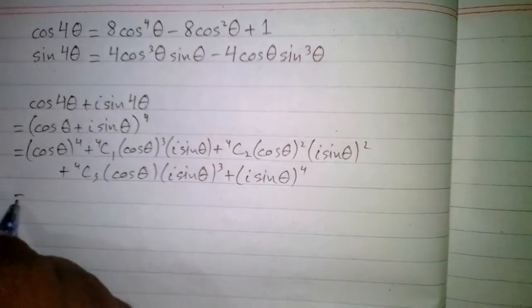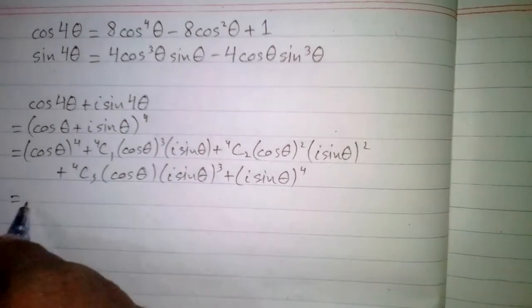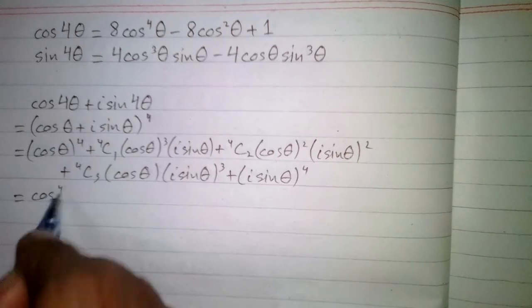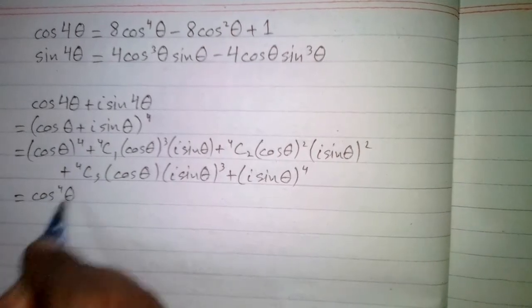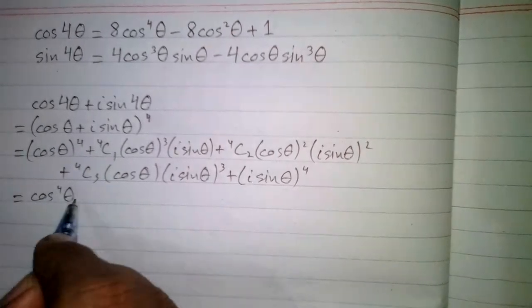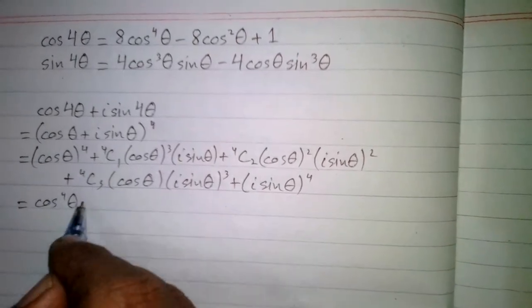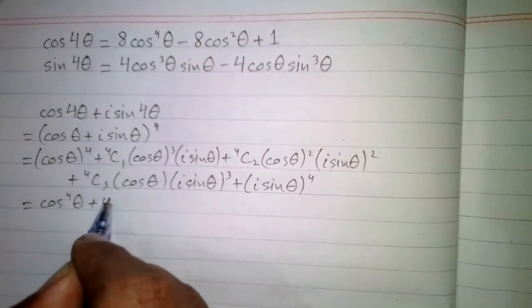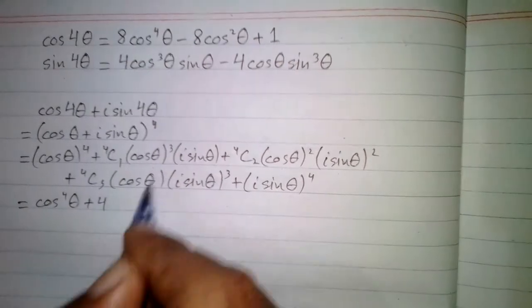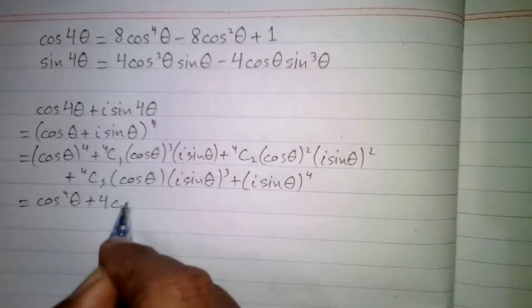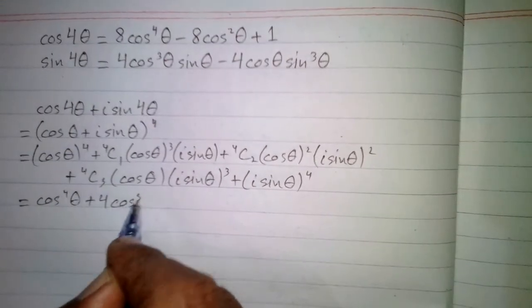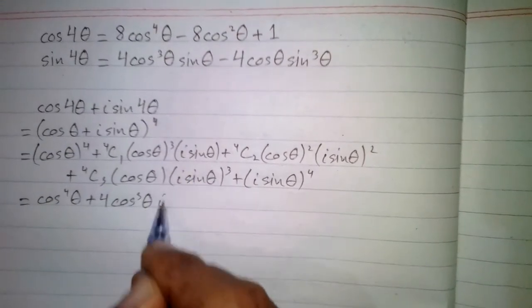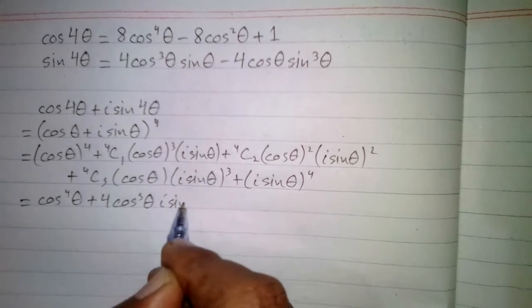Now cos⁴θ can be written as cos⁴θ, then 4C1 is 4, so we have 4·cos³θ multiplied by iota·sinθ.